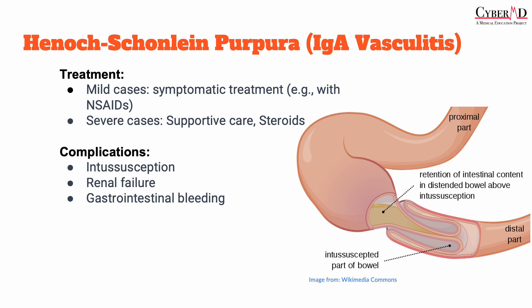The treatment for HSP is essentially supportive care. It's a self-limited disease, and in most cases it resolves without intervention in about four to six weeks. Supportive care is aimed at controlling symptoms and preventing complications, including hydration, rest, and NSAIDs for abdominal or joint pain. Topical corticosteroids may be used if abdominal pain is severe. In really severe cases, glucocorticoids may be necessary to prevent renal damage by reducing inflammation. Antihypertensive medication can be used if patients have severe hypertension associated with renal involvement. Very rarely, immunosuppressive therapy may be considered.